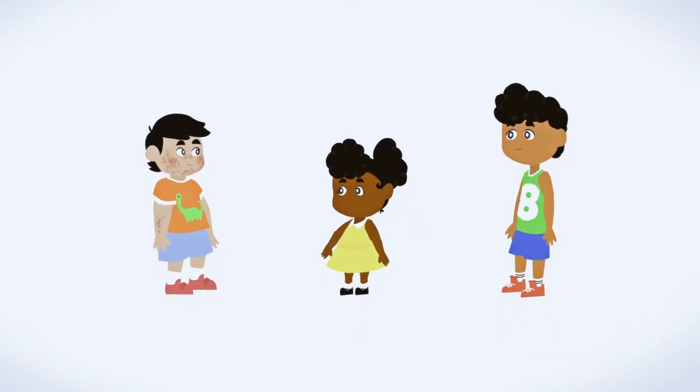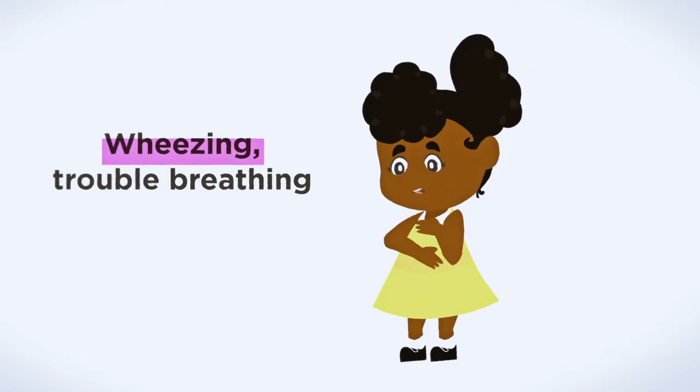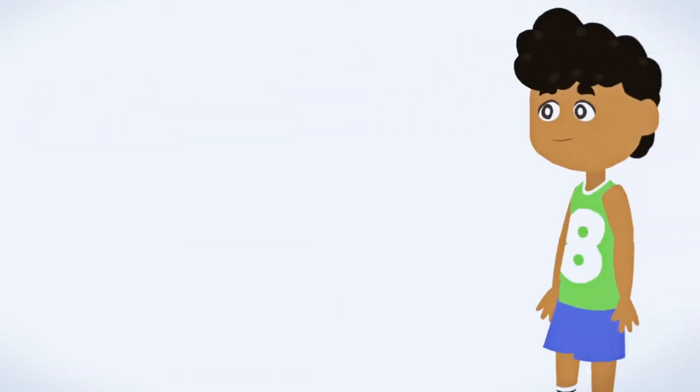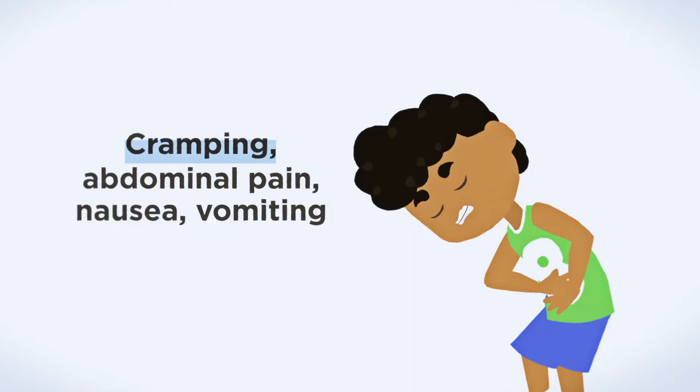The first classic symptom is hives, itching, or redness. The second classic symptom is wheezing or trouble breathing. The third classic symptom is cramping, abdominal pain, nausea, or vomiting. The person may double over in pain.